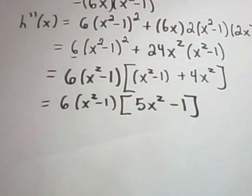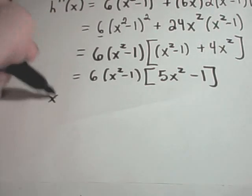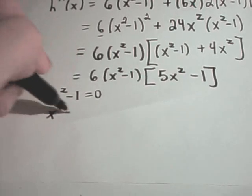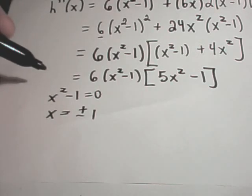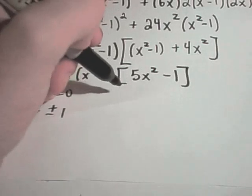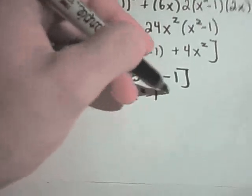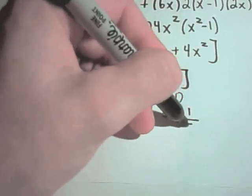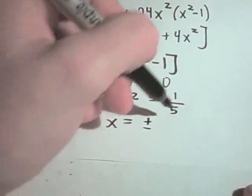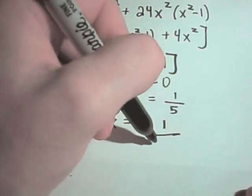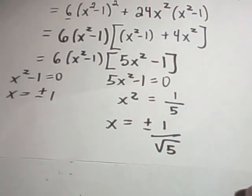Now we find the critical numbers. Setting x² - 1 = 0 gives x = ±1 (add 1 and take the square root, or factor as (x-1)(x+1)). Setting 5x² - 1 = 0: add 1, divide by 5, take the square root, giving x = ±1/√5. So the critical numbers are x = -1, -1/√5, 1/√5, and 1.